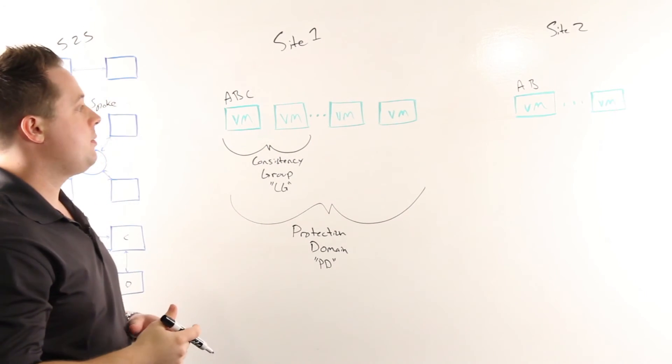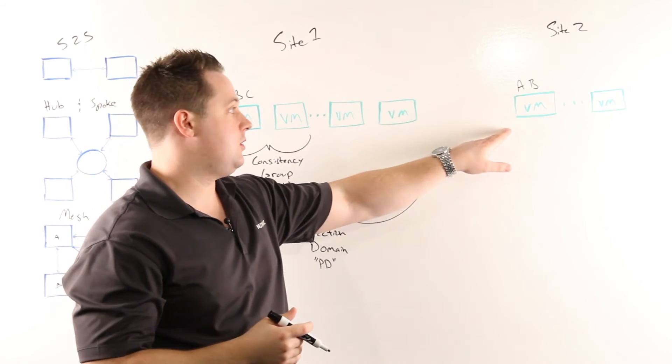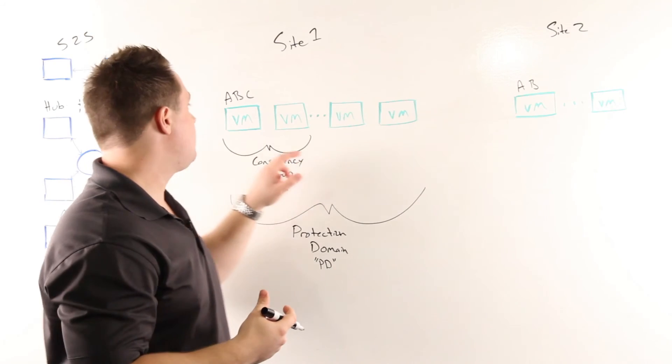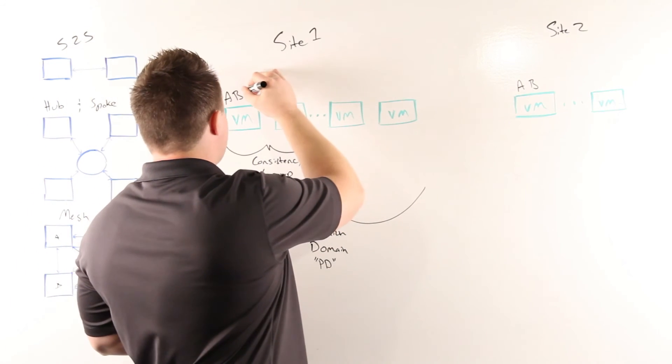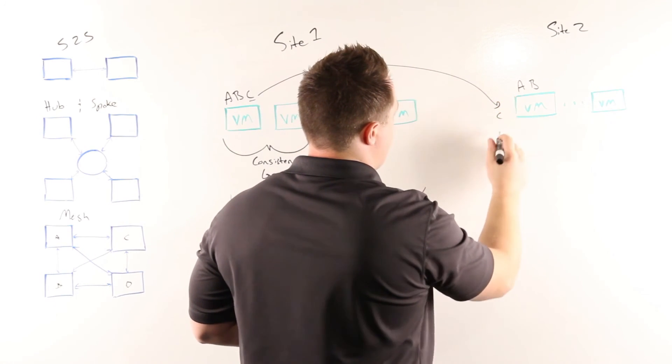when I actually go to do the replication, we'll first query the remote site that we're replicating to, see which data or fingerprints it has, compare that to what we're going to replicate, and only send the data—which in this case would be C—over to the target site for replication.